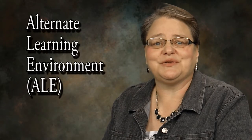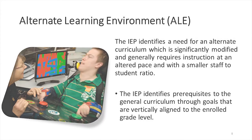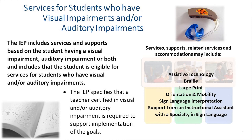An alternative learning environment supports students when the IEP identifies a need for an alternative curriculum which is significantly modified and generally requires instruction at an alternate pace with a smaller staff-to-student ratio. The IEP identifies prerequisites to the general curriculum through goals that are vertically aligned to the enrolled grade level. Students who are identified with an auditory or visual impairment will have an IEP that includes supports and services that provide access with instruction and accommodations that address the needs of the disability. When a teacher who is certified in the area of the specialty is required, that teacher is identified as one of the implementers of the IEP.